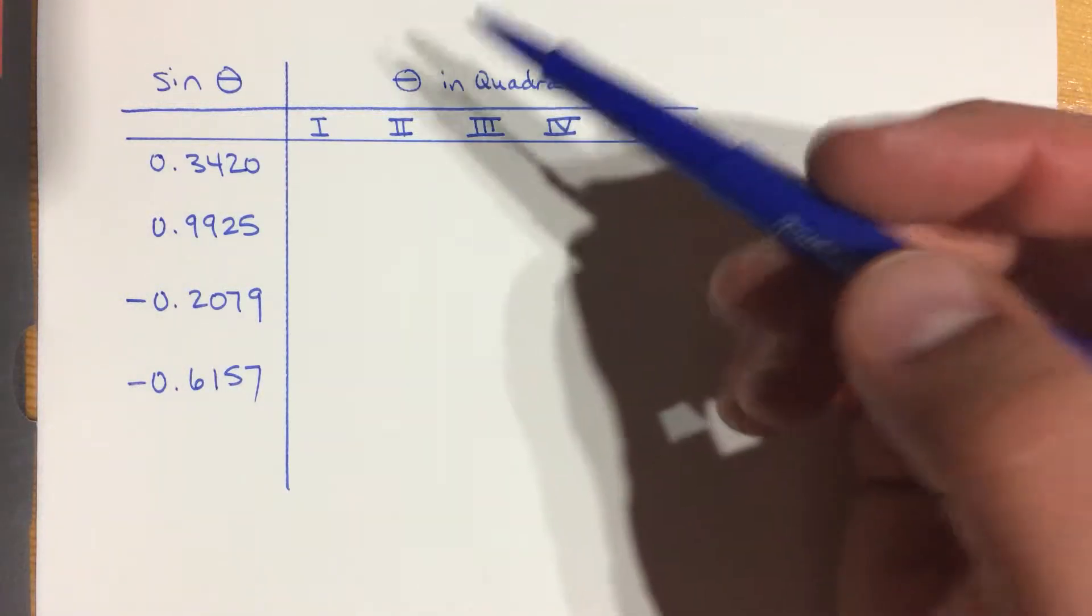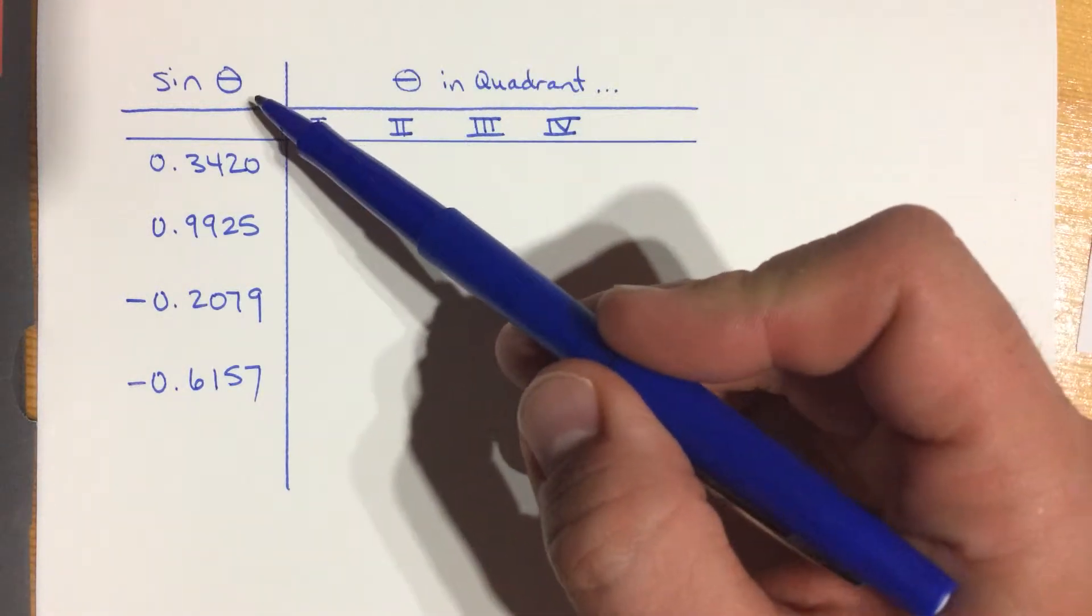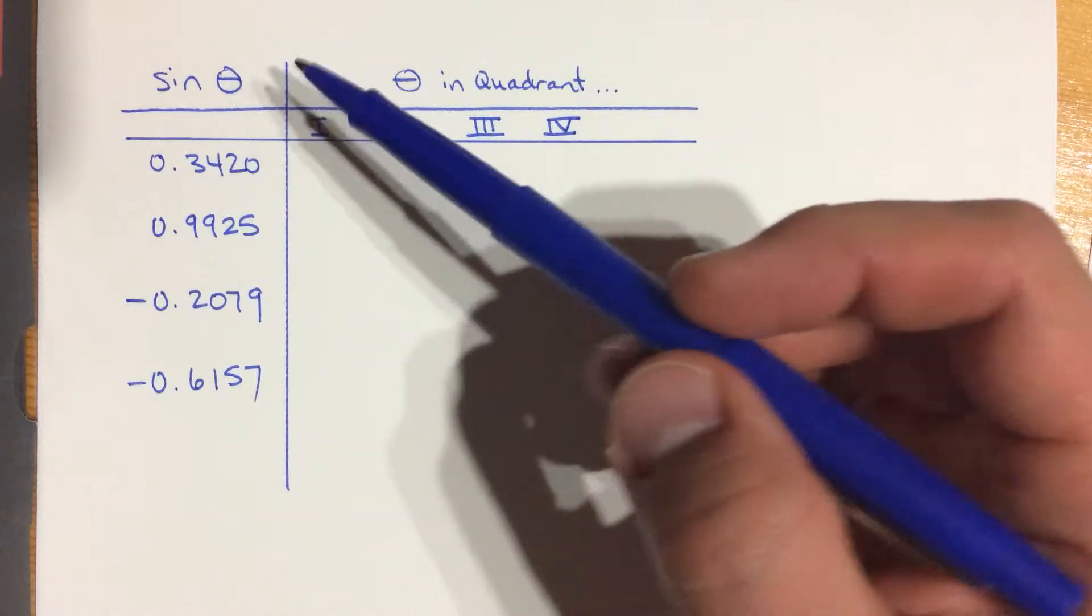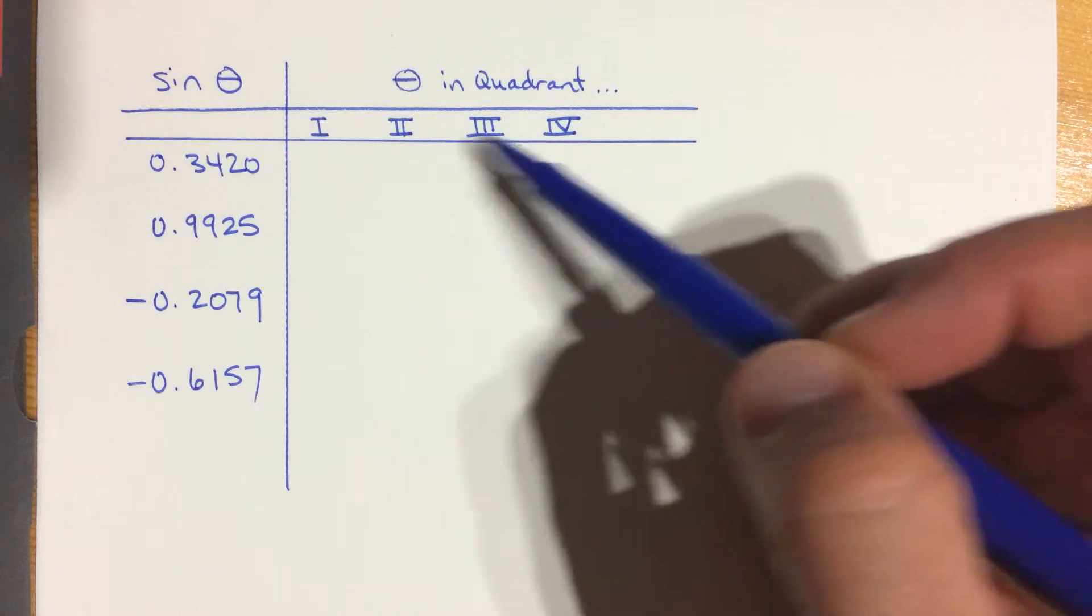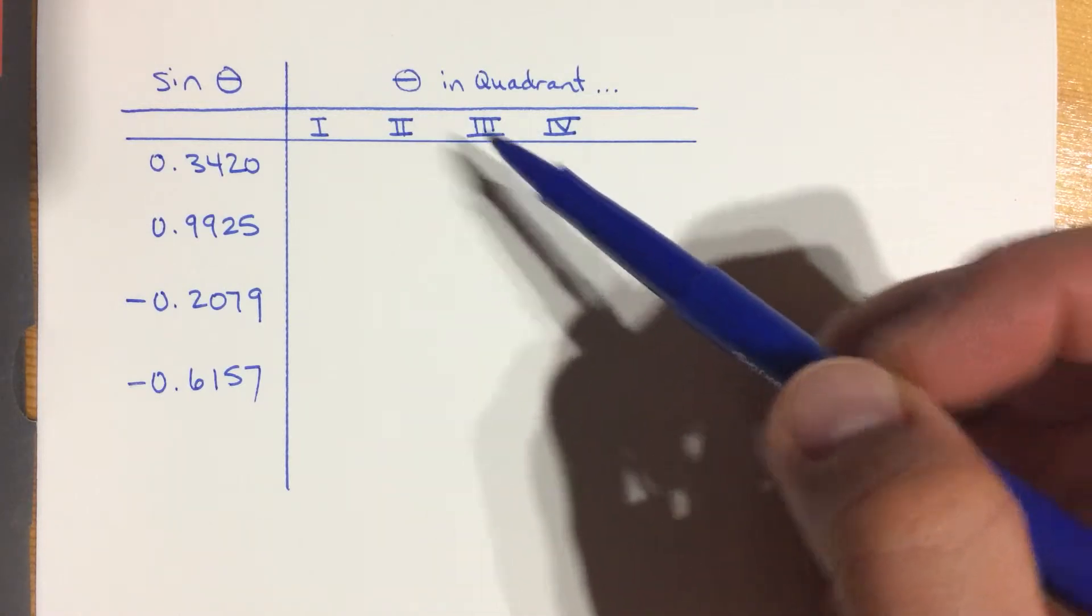Hi, I'm Brandon Grazely. I'm a high school math teacher, and we've been looking at the sine function and learning how to use it to find the value of an angle when the angle is in one of the four quadrants.